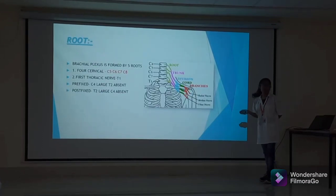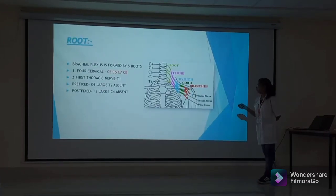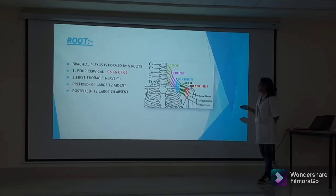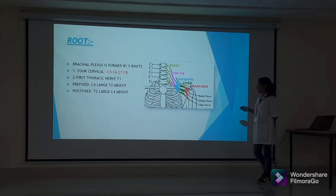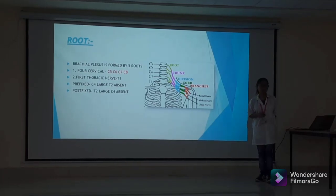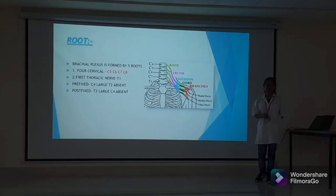The brachial plexus is formed by five roots: C5, C6, C7, C8, and the first thoracic nerve T1. When it receives branches from C4, it is called pre-fixed, and when it receives branches from T2, it is called post-fixed.